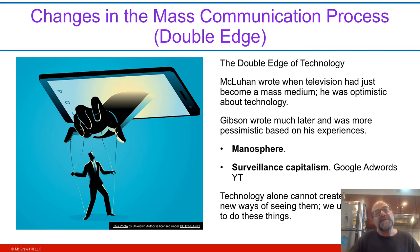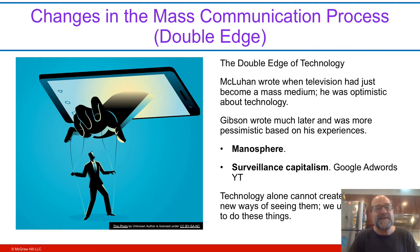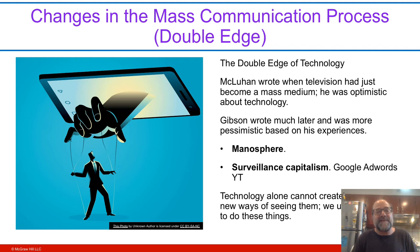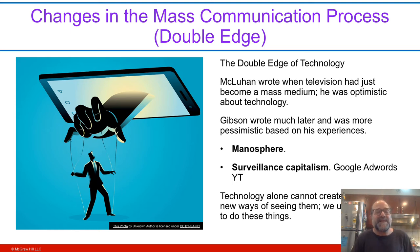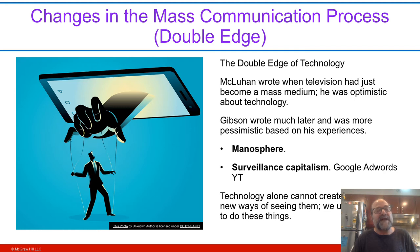Marshall McLuhan, who wrote about mass media, was very optimistic — TV being the brightest thing in the house. But there are some bad things that come with it too. Surveillance capitalism: the idea that someone's always watching. Why am I seeing this ad? It's because I searched for this term, and now I'm getting delivered ads related to it. So my privacy is at risk here.